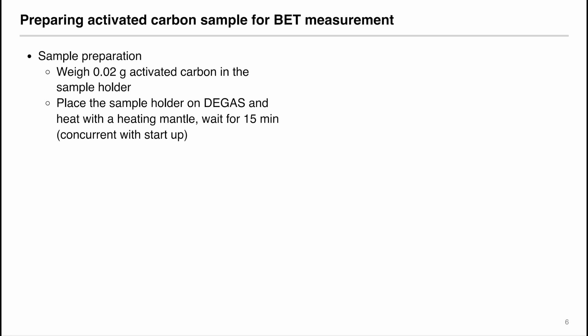When preparing the sample, weigh 0.02 grams of activated carbon in the sample holder. Then place the sample holder on the degas position, and heat the sample holder with the heating mantle. Then wait for 15 minutes. This can be done at the same time when the instrument is starting up.